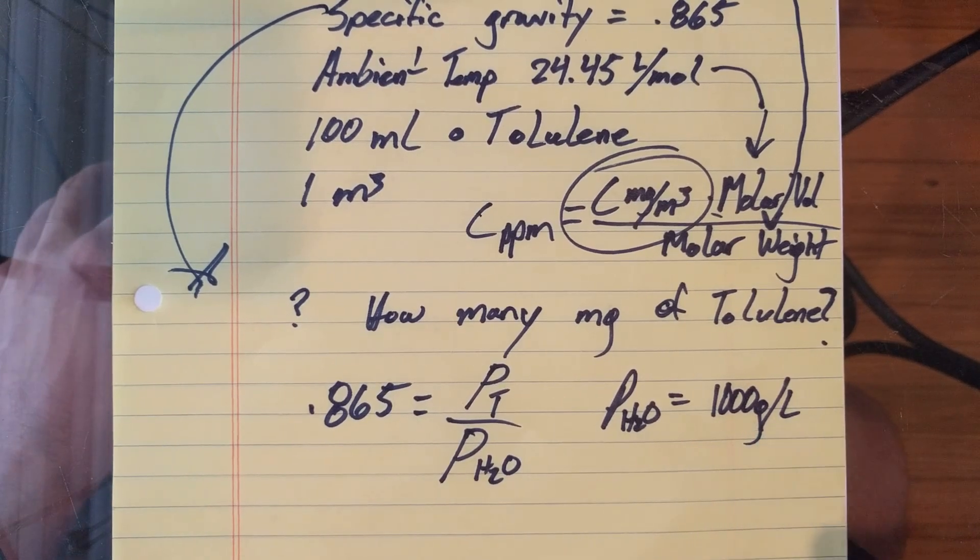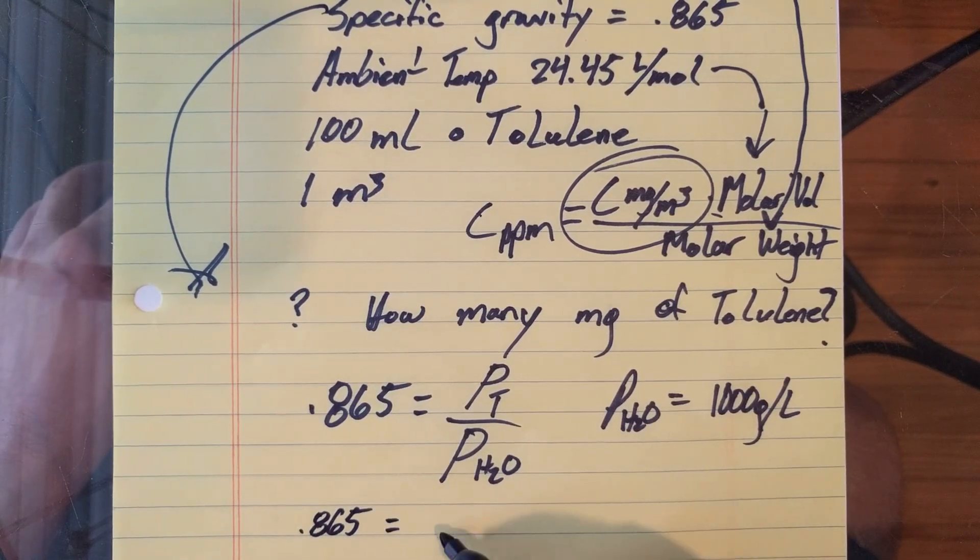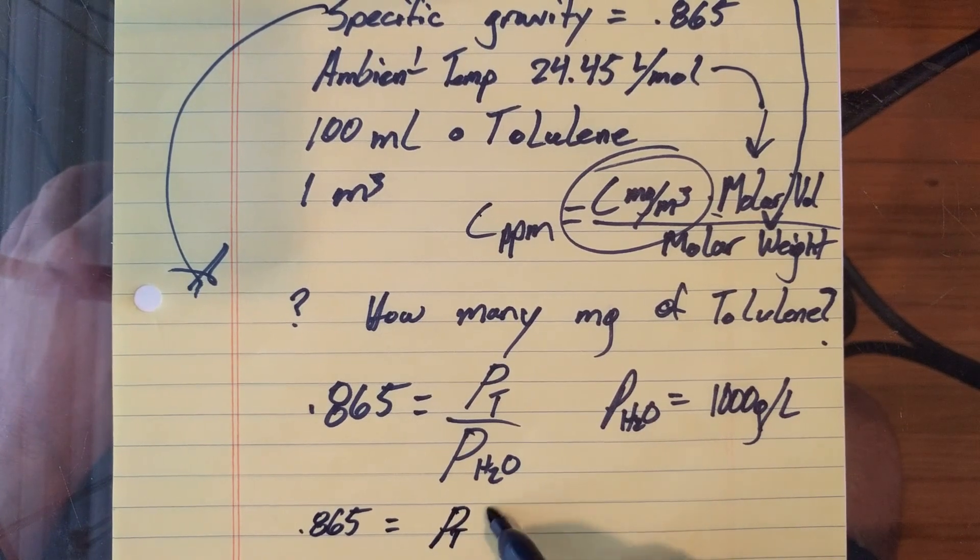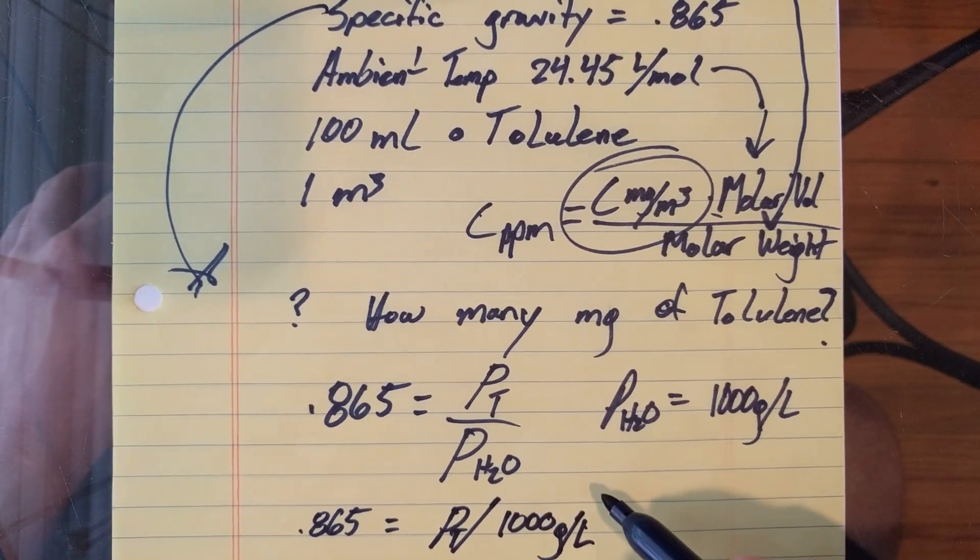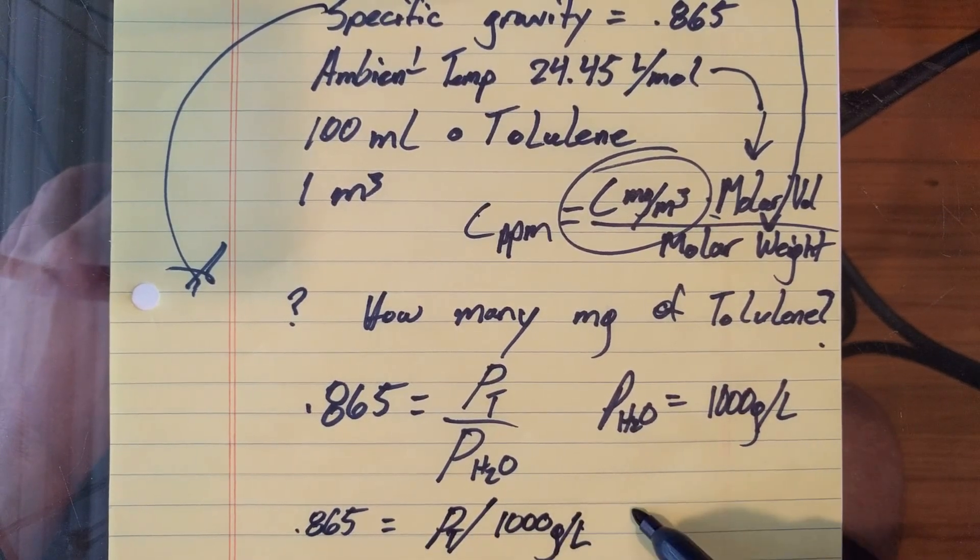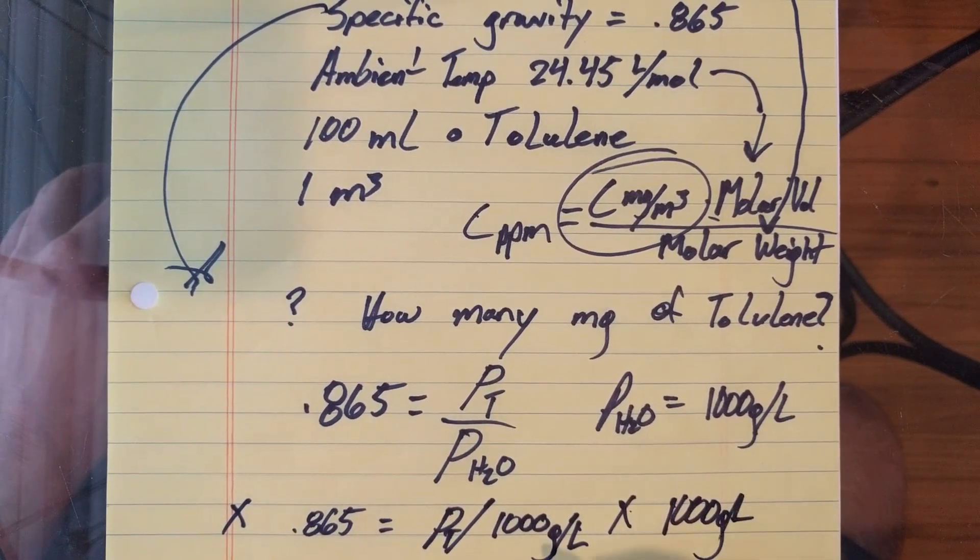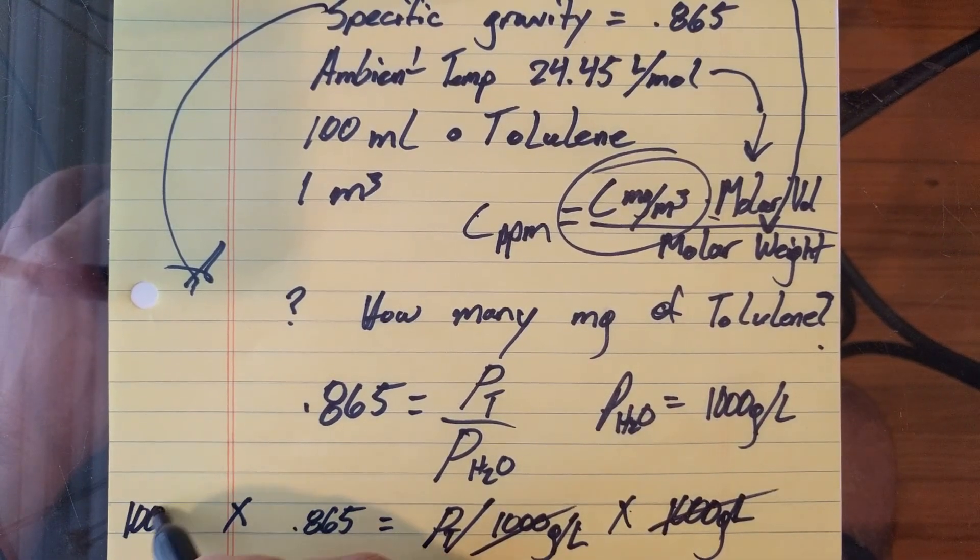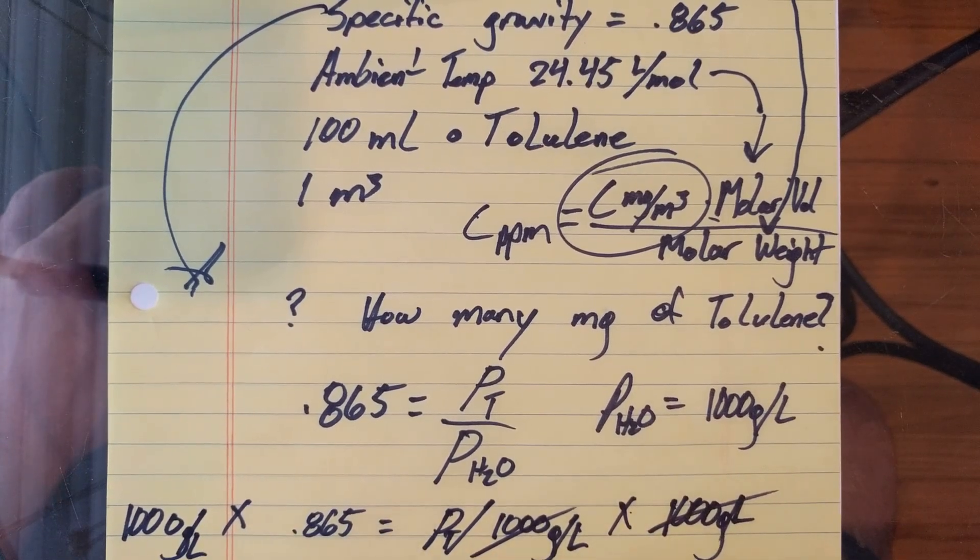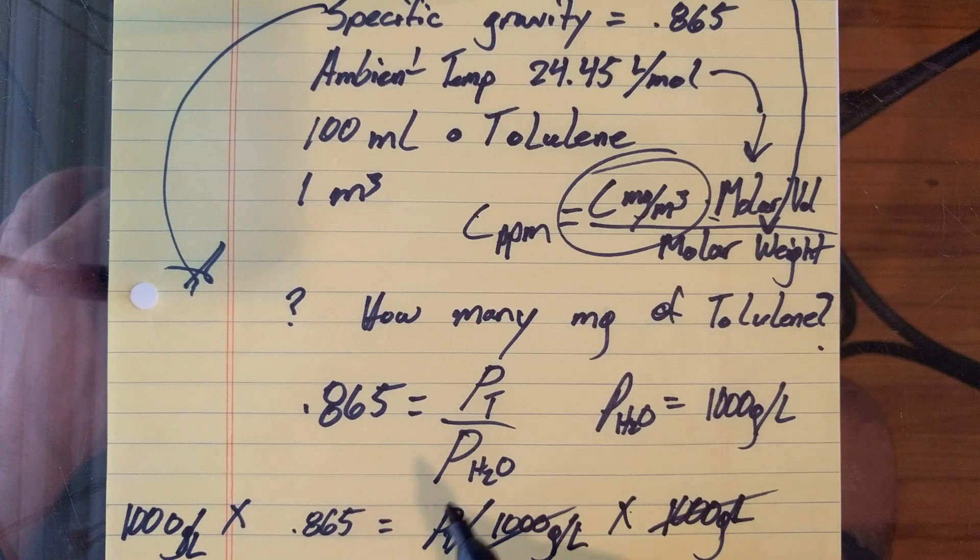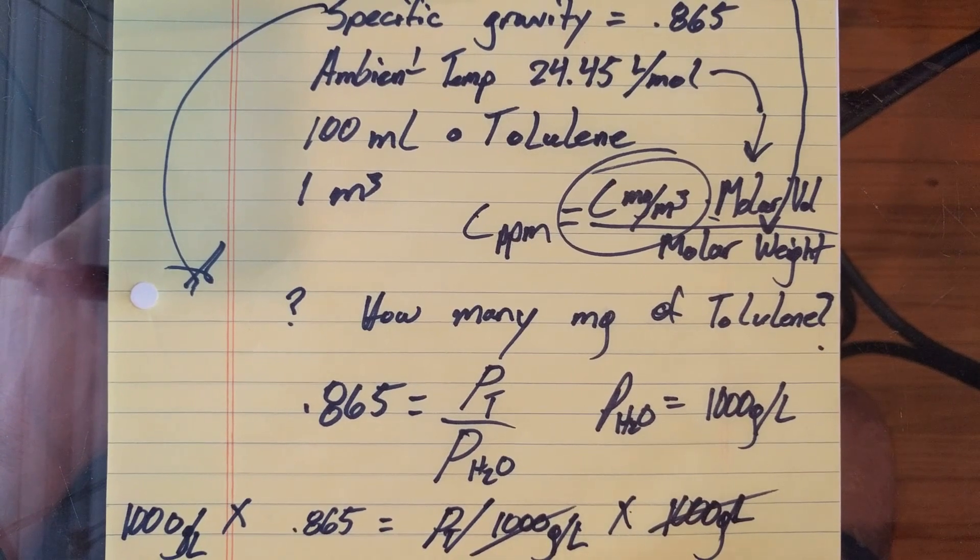But grams per liter works pretty good for us right now. So you're going to start: 0.865 is equal to density of toluene divided by 1,000 grams per liter. So in order to get rid of that, 1,000 is on the bottom, so we're going to multiply both sides by 1,000 grams per liter.